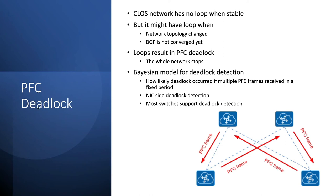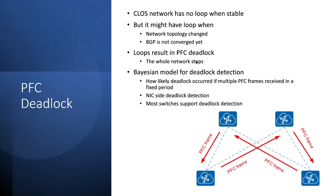PFC is pretty simple, but it has a lot of performance issues. For example, PFC can incur deadlock in the network. Why? Because if there's a loop in the network, it might cause deadlock. For example, if one node receives a lot of data from its upstream, it might send a PFC frame. Another node also receives a lot of packets from its upstream and sends a PFC frame as well. Because there's a loop in the network, all the nodes in the loop will receive PFC, all will stop sending packets, and the whole network stops. That's pretty bad.